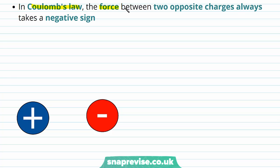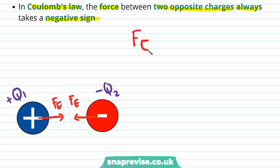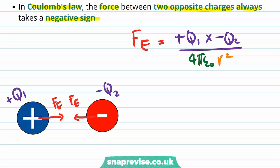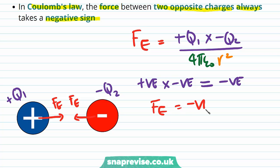In Coulomb's law, the force between two opposite charges always takes a negative sign. For two oppositely charged particles, one with charge plus q1 and the other with minus q2, the force between them is attractive. Since we have opposite charges, the numerator contains a positive charge multiplied by a negative charge, which is always negative. Therefore, the electrostatic force is always negative for opposite charges, confirming that an attractive electrostatic force is negative.